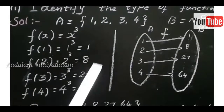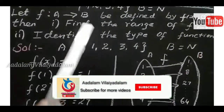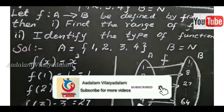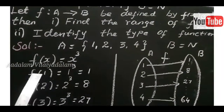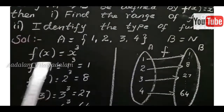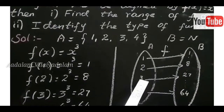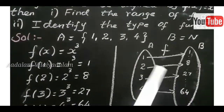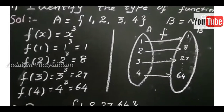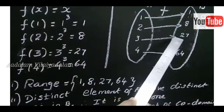Next, we have to find the type of function. Draw the arrow diagram. The domain values are 1, 2, 3, 4, and B is the natural numbers starting from 1, 2, 3 and so on. X=1 maps to 1, X=2 maps to 8, X=3 maps to 27, X=4 maps to 64. Distinct elements of A have distinct images in B, therefore it is a one-to-one function.